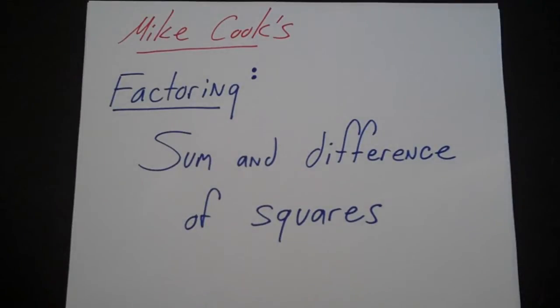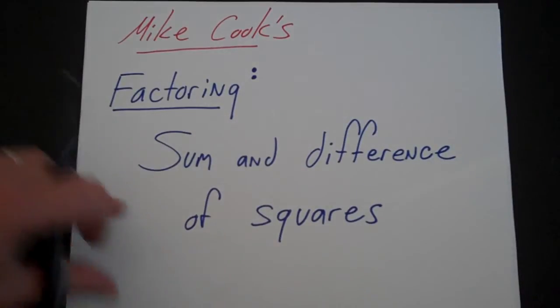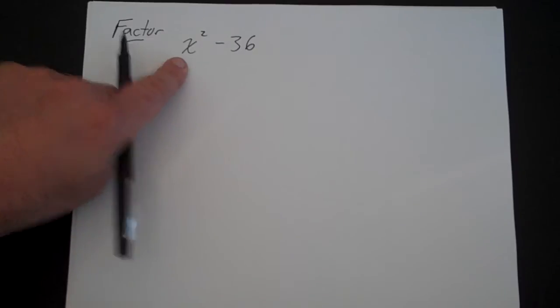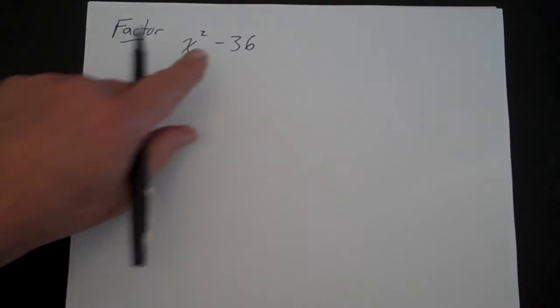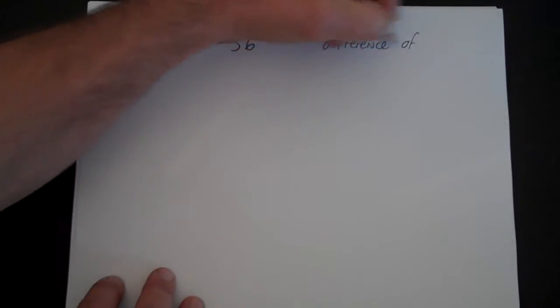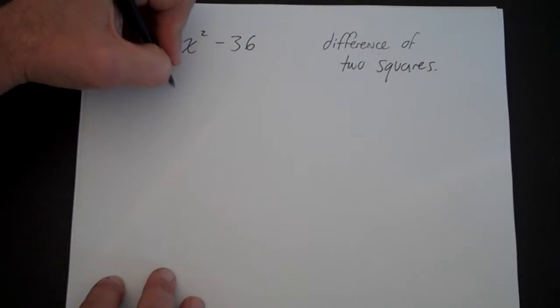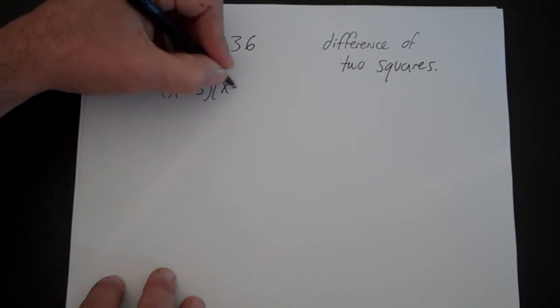Let's continue factoring. This time let's look at the sum and difference of squares. We have to realize that this is based on what we learned in Algebra 1 and Algebra 2. If you want to factor x squared minus 36, since x squared is a square and 36 is a square and they are separated by a negative sign, this is called the difference of two squares. When we factor that, it's going to be x plus 6, x minus 6.